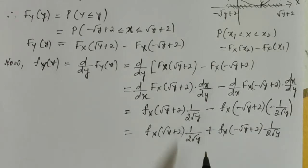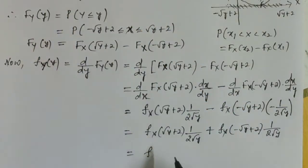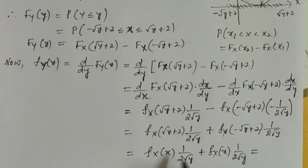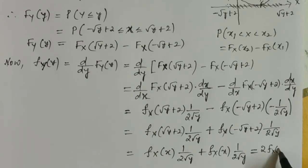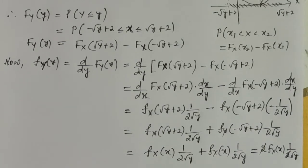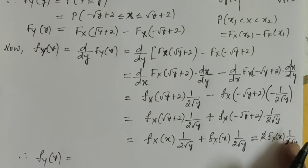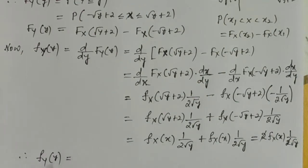Since x = √y + 2 and also x = -√y + 2, this can be written as f_X(x)·(1/2√y) + f_X(x)·(1/2√y), which equals 2·f_X(x)·(1/2√y). The 2 cancels, so therefore f_Y(y) = f_X(x)·(1/2√y).